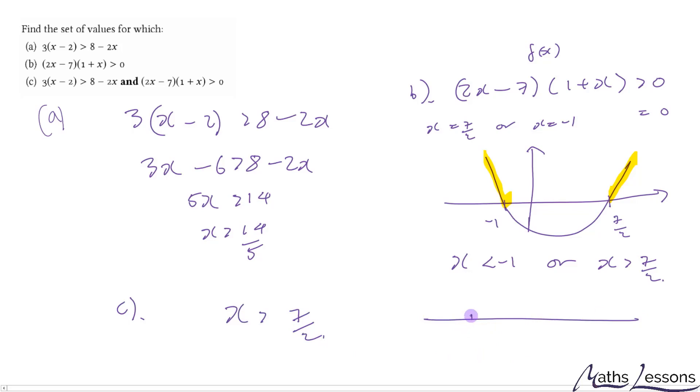Another way we can look at it is to put our values down. So there's the minus 1. There's the 14 over 5, which is 2 and 0.8. And then we've got 3 and a bit, 7 over 2 here. And there's the yellow ones we had before. And then we've got this one here. So we can see that it's only both satisfied when x is greater than 7 over 2.